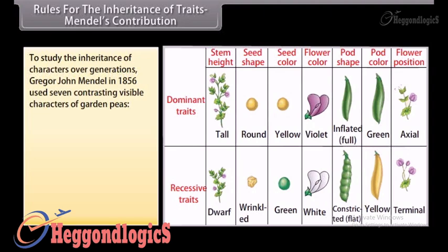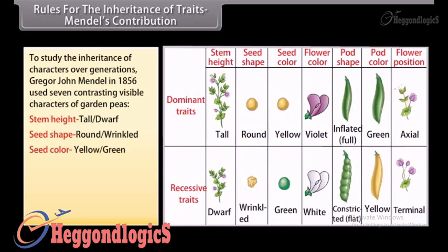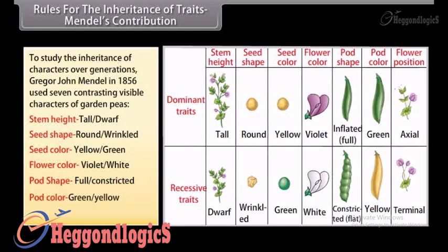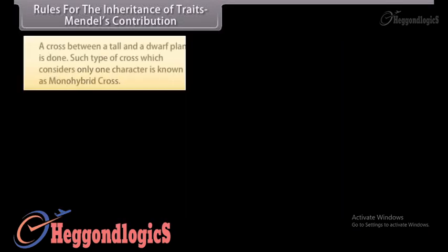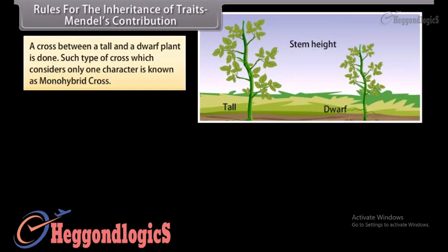The seven characters were: stem height (tall vs. dwarf plants), seed shape (round vs. wrinkled seeds), seed color (yellow vs. green seeds), flower color (violet vs. white flowers), pod shape (full vs. constricted pods), pod color (green vs. yellow pods), and flower position (axial vs. terminal flowers). A cross between a tall and a dwarf plant, considering only one character, is known as a monohybrid cross.